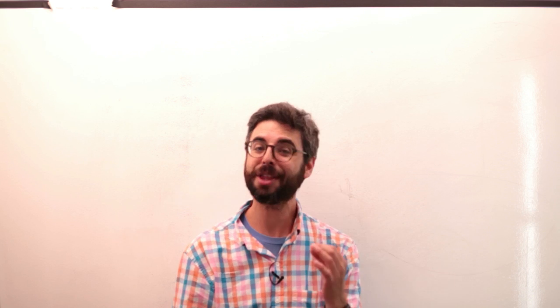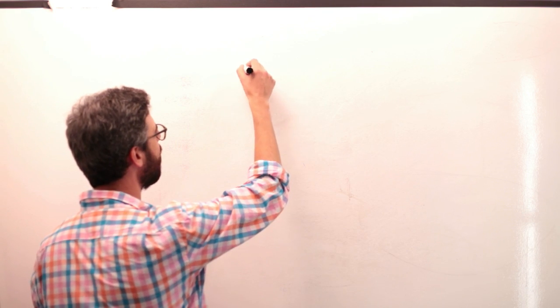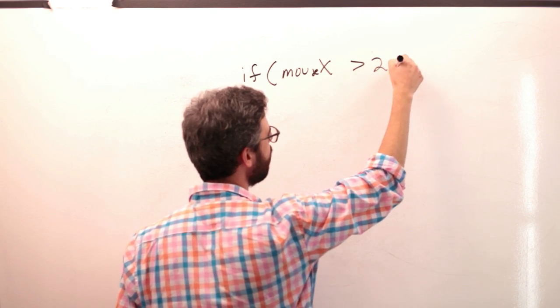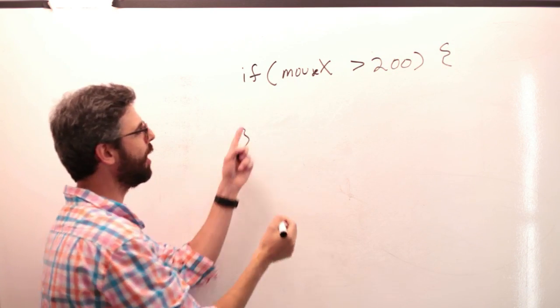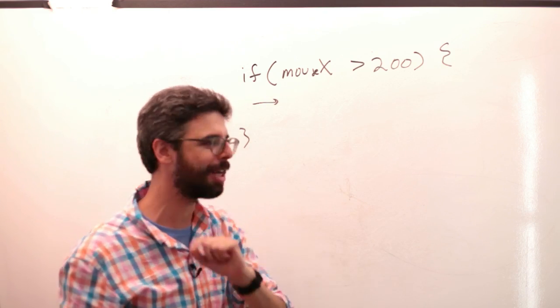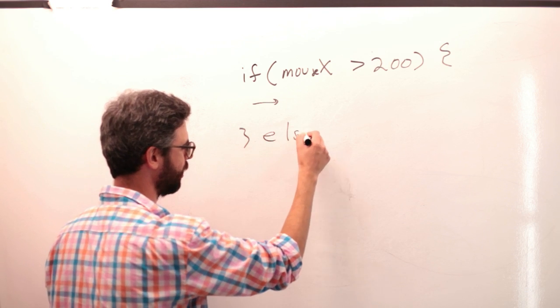The first one I want to show you is the keyword else. Think of it this way: if it's very hot, turn on the air conditioning — otherwise, take a nap. Else is essentially that 'otherwise.' So if mouseX is greater than 200 and that evaluates to true, execute this code. If it's false, we don't execute the code in there. But what about that otherwise case? Else gives us an otherwise.